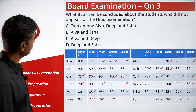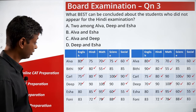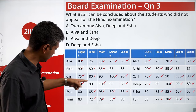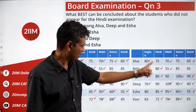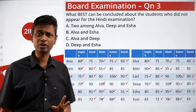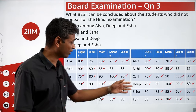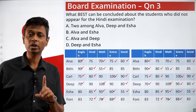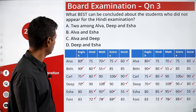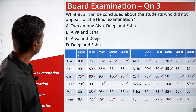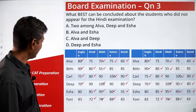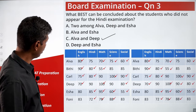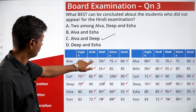What best can be concluded about the students who did not appear for the Hindi exam? Alba and Deep did not appear — there is no ambiguity there. Alba and Deep did not appear for the Hindi exam in both scenarios. The only ambiguity between Alba and Deep is who attended Science and who didn't. Everything else we know. The answer is Alba and Deep.